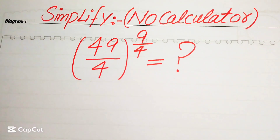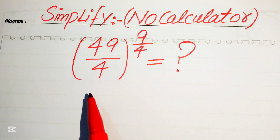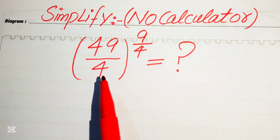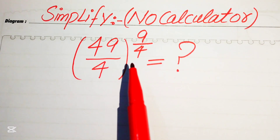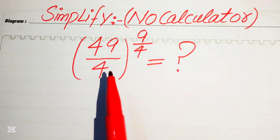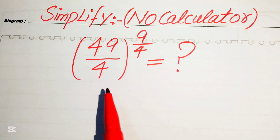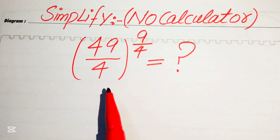Hello everyone. How to simplify this nice algebraic expression without using the calculator. So if we have 49 over 4 to the power of 9 over 4, we want to reduce this into the simplified or lowest form. The calculator is not allowed in this problem — we do all of the working mentally.